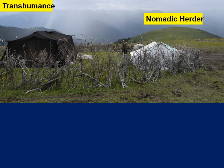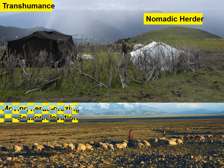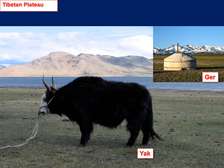Nomadic herders are found on the Tibetan Plateau. They shift based on elevation — in the higher elevations in winter it's very cold, so they might move to lower elevations for more warmth. The important animal of this region is the yak, and yak butter tea is highly important to the people who live here.